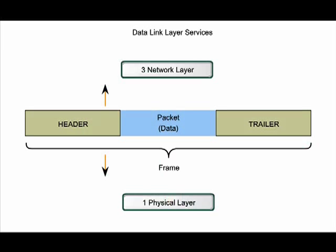The data link layer prepares a network layer packet for transport across the local media by encapsulating it with a header and a trailer to create its own protocol data unit, or PDU. The data link layer PDU is called a frame.